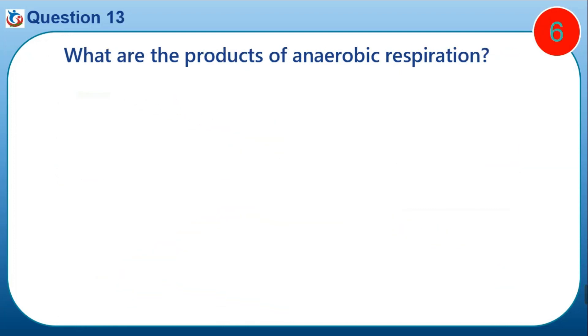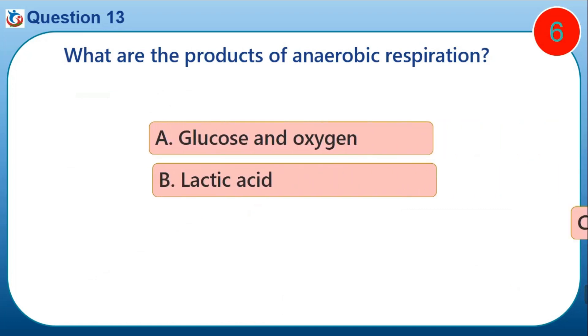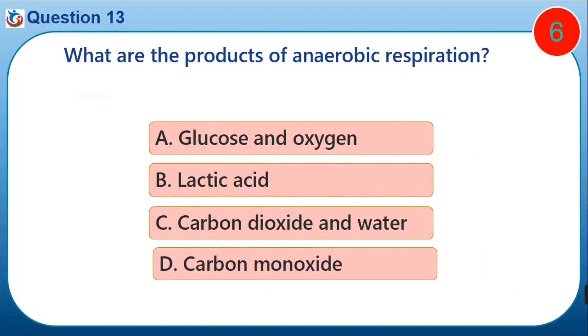Question thirteen: what are the products of anaerobic respiration? A) glucose and oxygen, B) lactic acid, C) carbon dioxide and water, D) carbon monoxide.